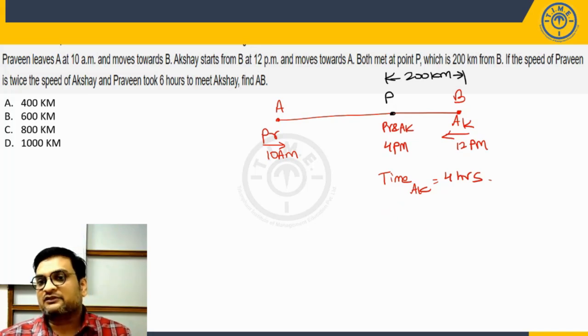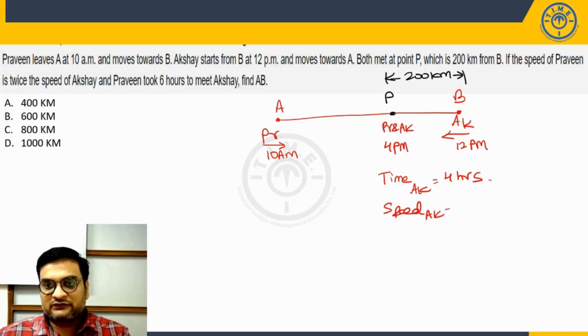So if time is known, the distance that Akshay is travelling, Akshay is travelling 200 kilometers to the meeting point. Thus can I say speed of Akshay will be nothing but the distance 200 upon time. It is giving us 50 kilometers per hour.